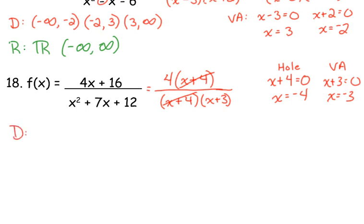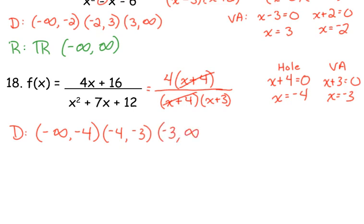So our domain — we've got to break it up again. Start at negative infinity, trucking along with no problems, then we hit negative 4 and we are undefined. So we break our domain up there. We keep going — just one unit — and we hit negative 3: another problem, a vertical asymptote. Then after that, smooth sailing. No other issues, so we continue from negative 3 to infinity.